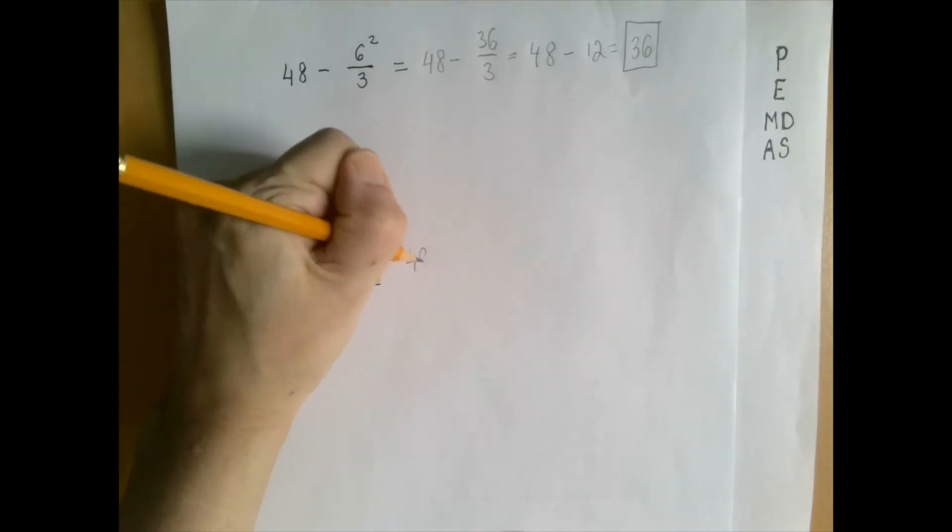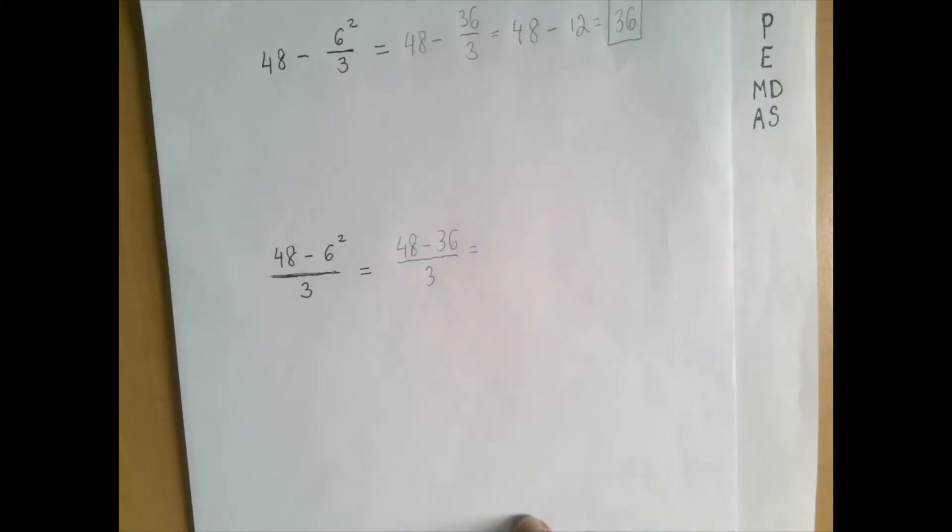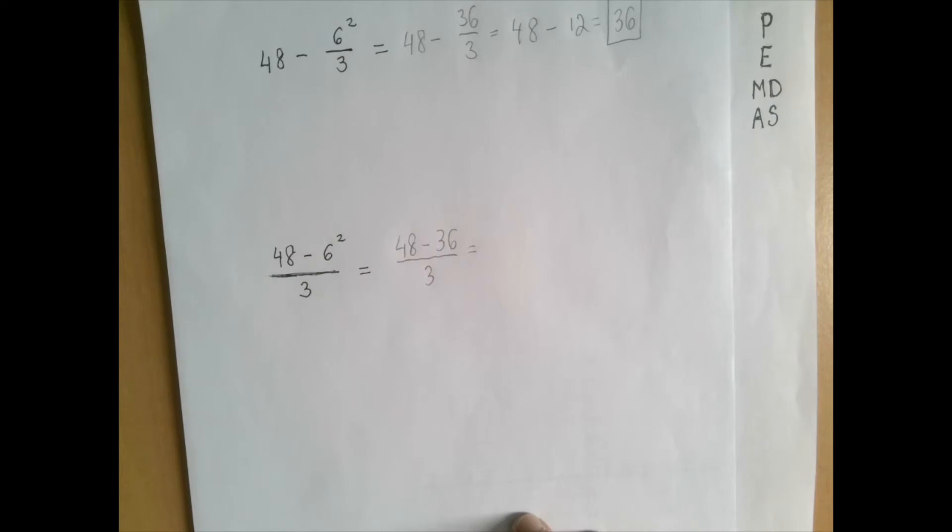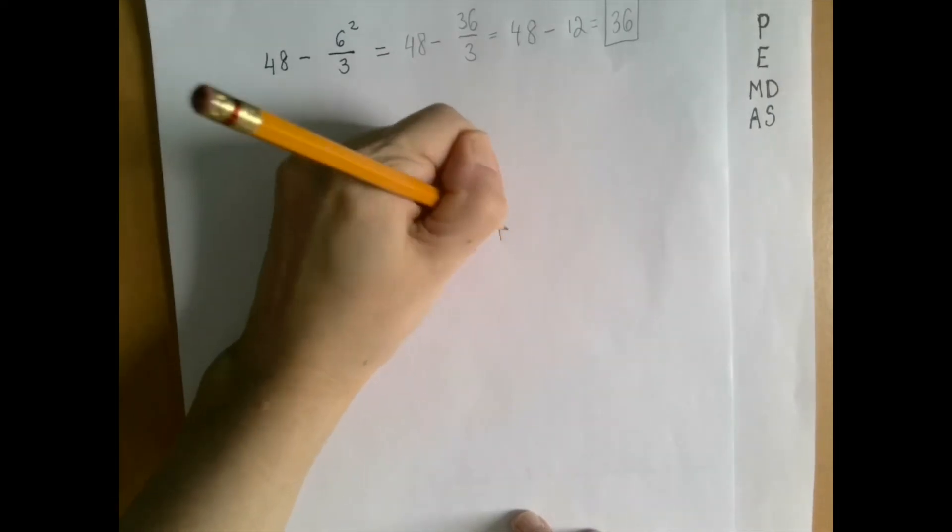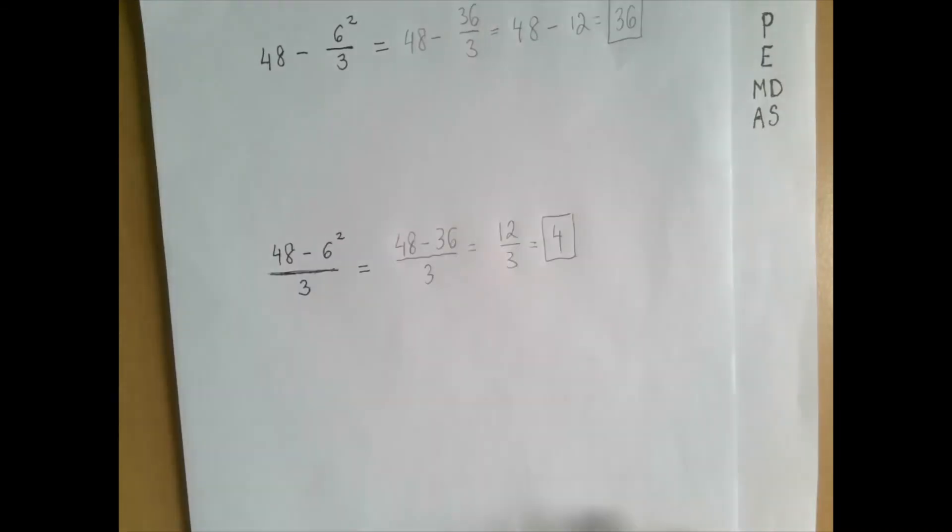So that's 48 minus 36 divided by 3. Then we do the subtraction: 48 minus 36 is 12, and 12 divided by 3 is 4. So what happened here?